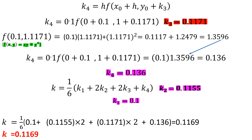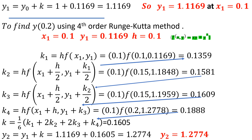With k1, k2, k3, and k4 all known, we compute k = (1/6)(k1 + 2k2 + 2k3 + k4). Putting all values in, k = 0.1169. Therefore y1 = y0 + k = 1 + 0.1169 = 1.1169, which is the value at x1 = 0.1.